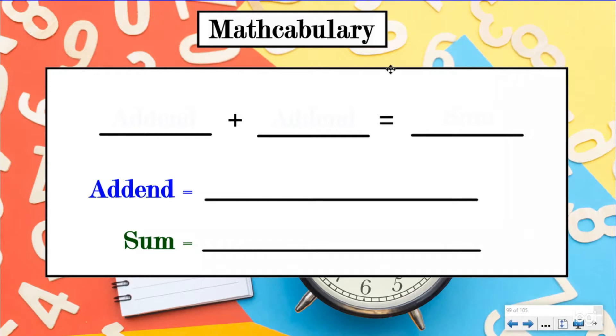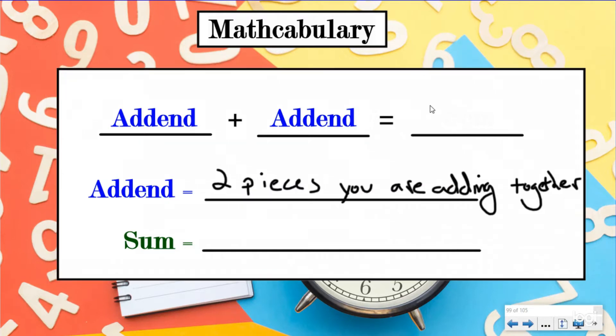And we're going to start with our basic addition problem today. We're going to label this. We have three parts to an addition equation and the first two are called the addend. The addends are the two pieces you are adding together. That makes sense. That's why they're called the addends. The answer to an addition problem is called our sum.